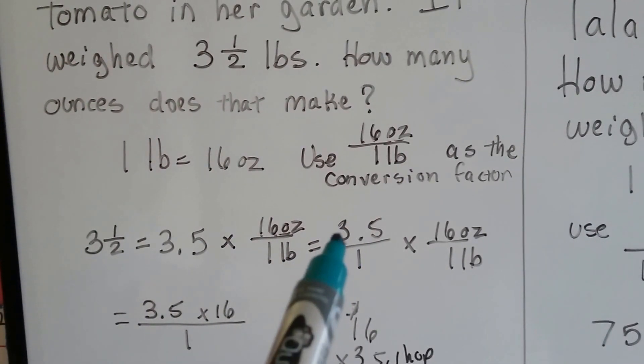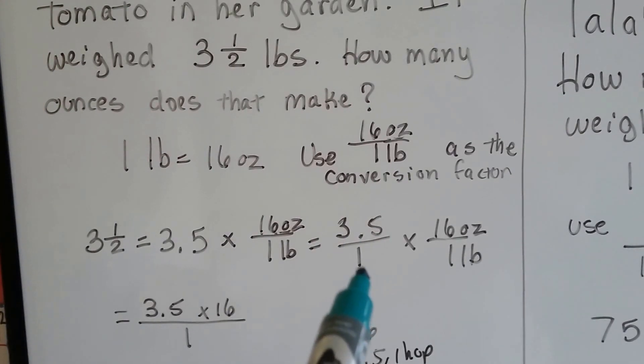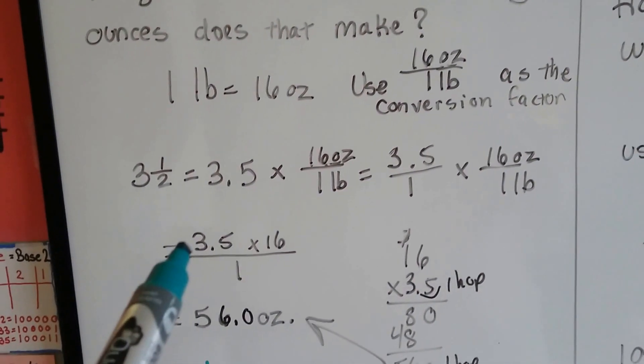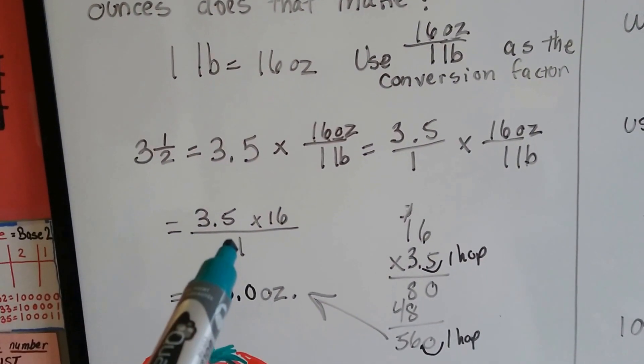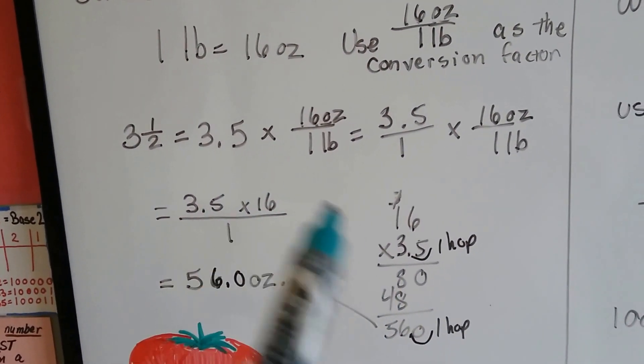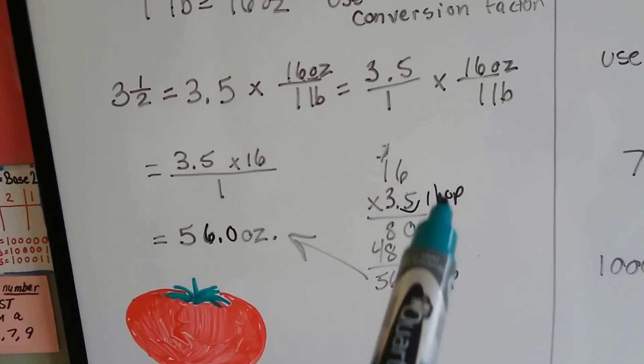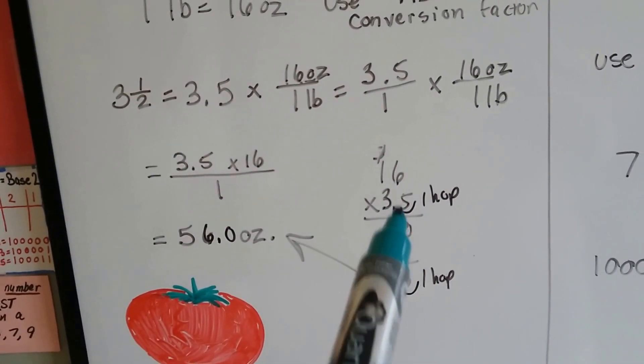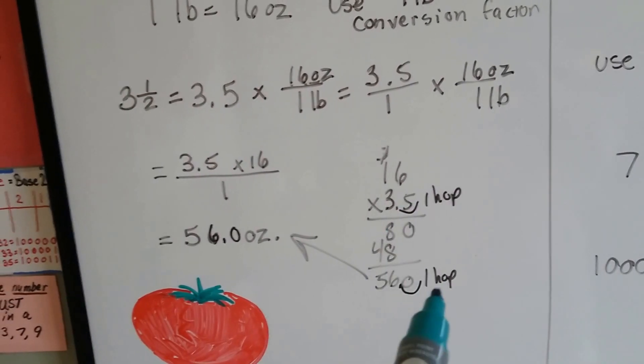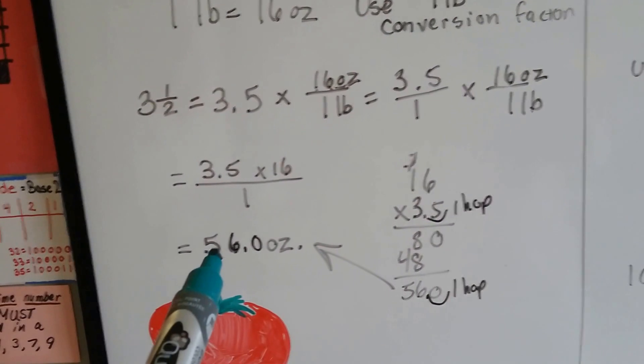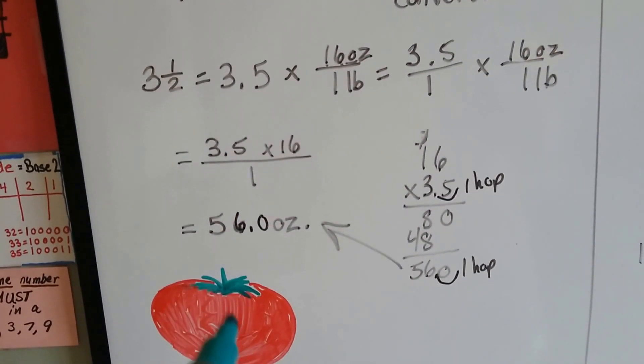We use our conversion factor of 16 ounces per pound. We turn it into a fraction, the 3.5, by putting it over 1, and we multiply it by the conversion factor. 3.5 times 16 over 1. 3.5 times 16 comes out to 56.0. We have one decimal hop in the equation, so we put one decimal hop in the product. So it's 56 ounces. Big tomato.